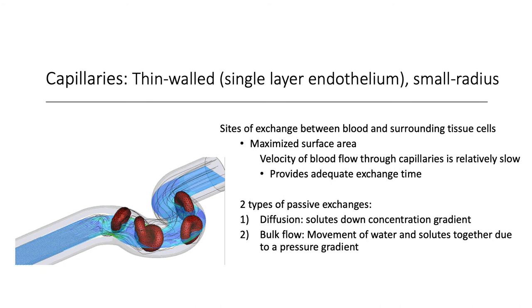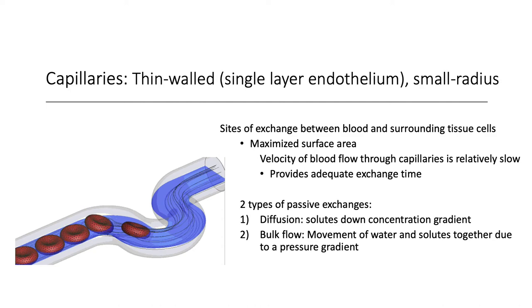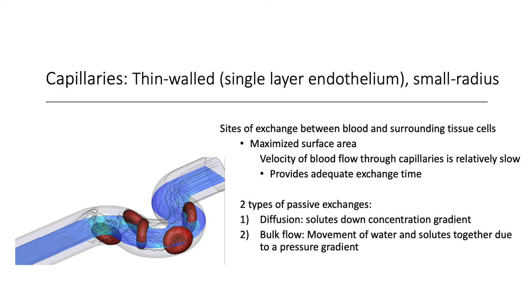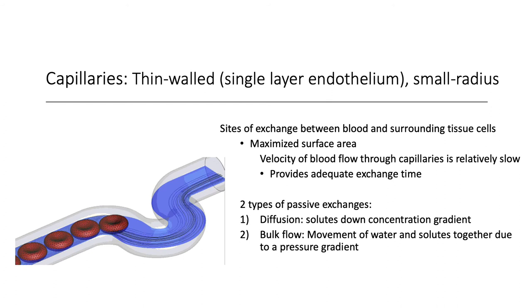Capillaries branch to bring blood within reach of every cell of the body. There are two types of passive exchange: diffusion — solutes moving down their concentration gradients, including fluids, gases, nutrients, and wastes — and bulk flow, which is the movement of water and solutes together due to an existing pressure gradient. Bulk flow will be covered in a future lecture.